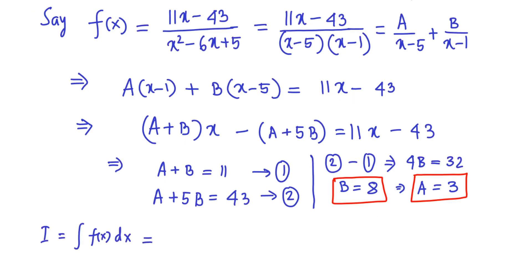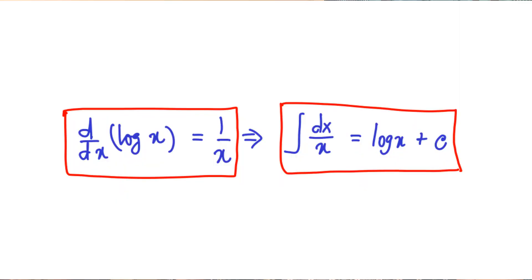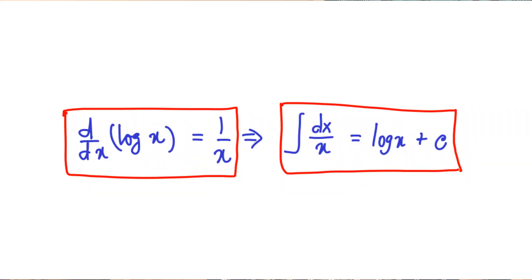Clearly, the indefinite integral of the given function can now be expressed as 3 times log of x minus 5 plus 8 times log of x minus 1 plus a constant of integration. Let me emphasize this point: if derivative of log of x is 1 over x, then this itself defines the antiderivative of the function 1 over x to be log x up to a constant.